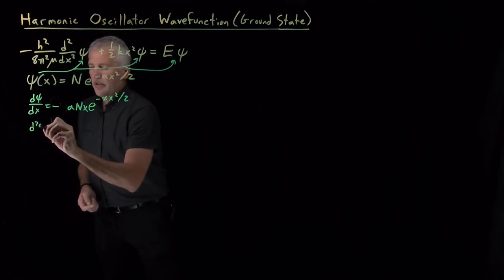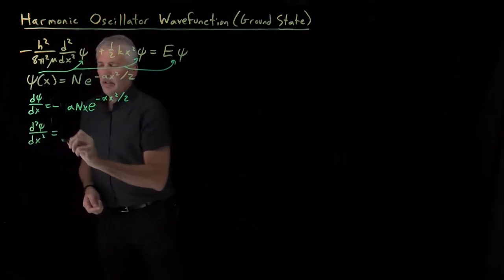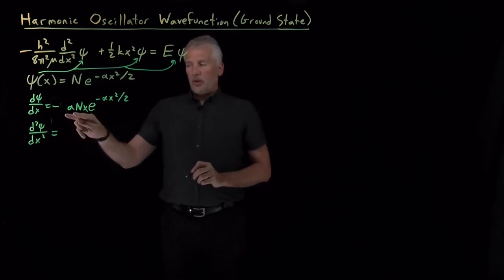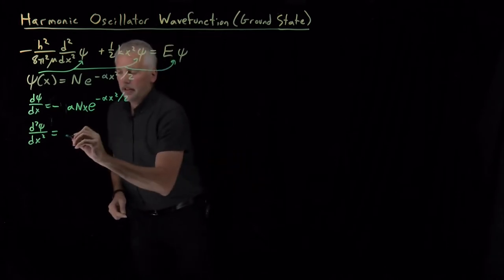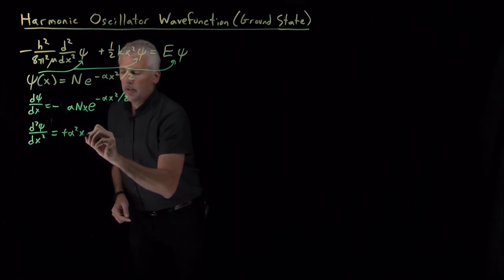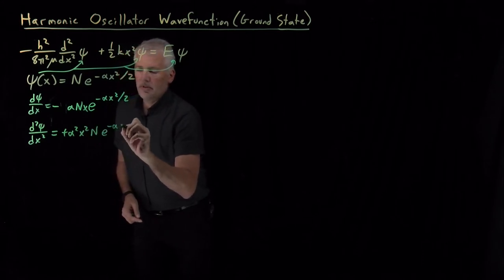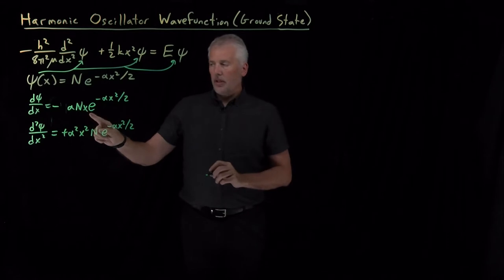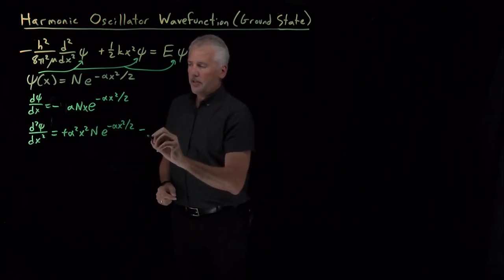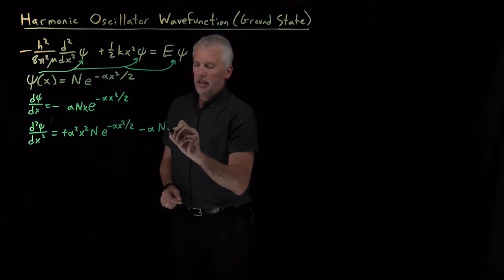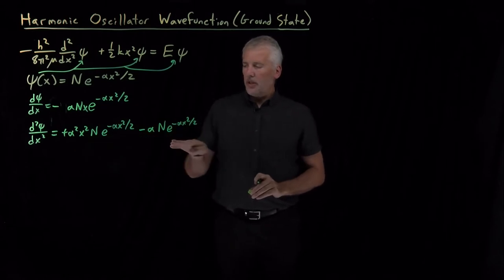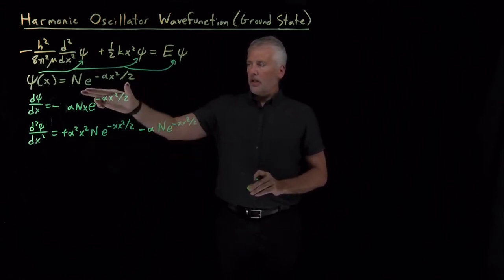For the second derivative — the derivative of this first derivative — the derivative of the exponential is again going to pull down another factor of minus alpha times x. So negative times negative is positive: alpha squared x squared times n, still times the same exponential. But we've also got this x out in front; taking the derivative of that one while leaving the rest alone gives a minus alpha n e to the minus alpha x squared over 2. So that's the second derivative of our hypothesized wave function.